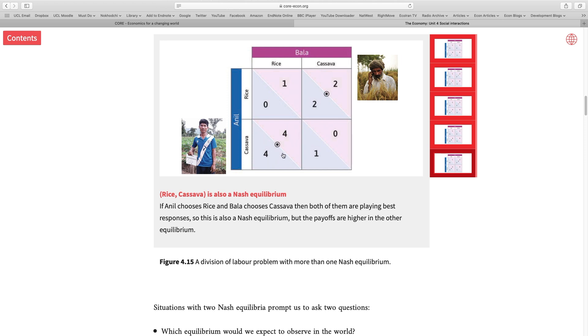Well you might say to yourself, what does this all have to do with the real world? In real world, you know, Bala and Anil can talk with each other and coordinate their decision and end up here. Well that's not necessarily the case if we increase the number of players in the game.